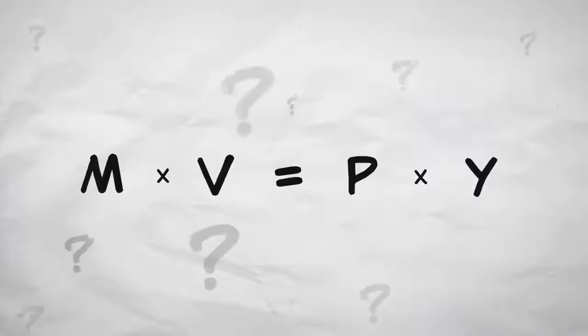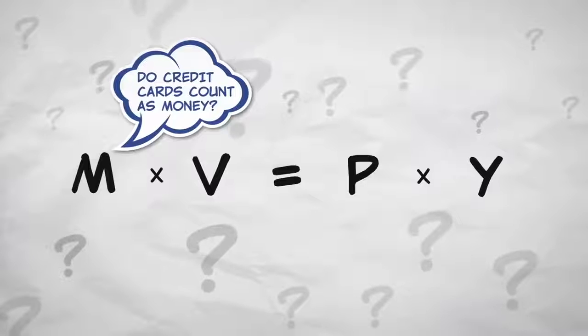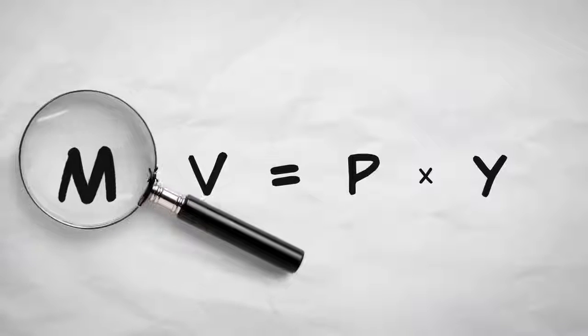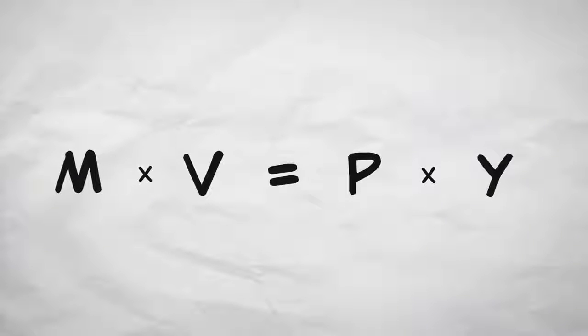There are important questions about the variables and how they are measured. How do we measure M, for example? However, the core identity that M times V must equal P times Y gives us a lot of insight and a way of organizing our thought about important macroeconomic issues.